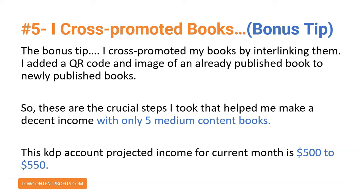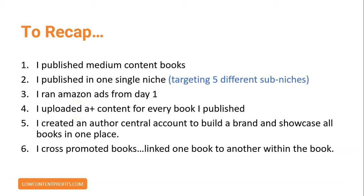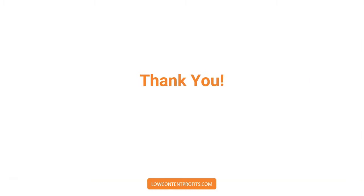These are the crucial steps I took that helped me make a decent income with only five medium content books. This KDP account's projected income for the current month is $500 to $550. To recap: I published medium content books in one single niche targeting five different sub-niches, ran Amazon ads from day one, uploaded A-plus content for every book, created an Author Central account to build a brand, and cross-promoted books by linking one to another within the book. These are all the tips I followed to make well over $900 on an account that was previously failing and making zero sales. Thanks for watching — see you in the next video.